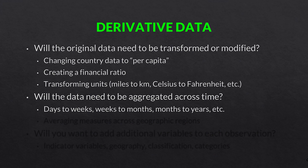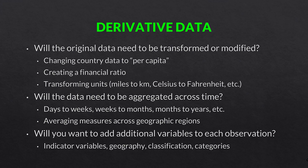Will the data need to be aggregated across time — turning days into weeks, weeks into months, months into years? That's a very common transformation. Another example is averaging or using a weighted average of measures across geographic regions, taking into account the proportional contribution of each region. You can also take a pure time series — just time and a measure — and then add additional columns for each variable, such as indicator variables (ones and zeros for some event), geographical region, or other classification categories.